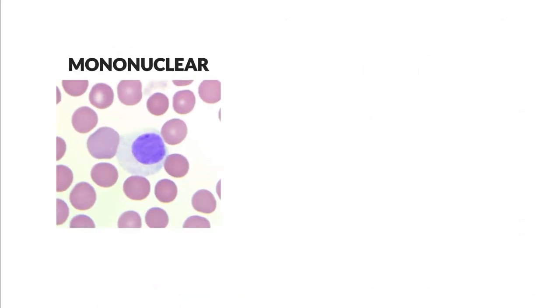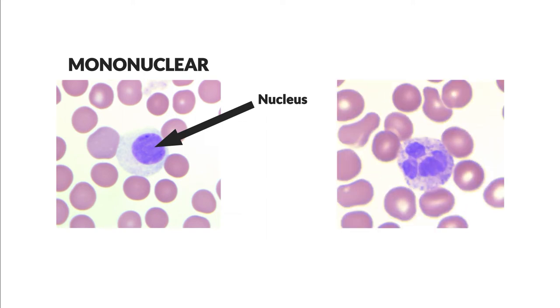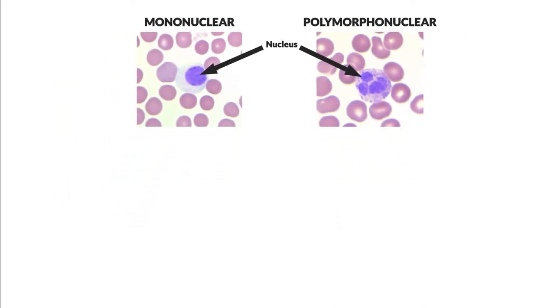Mononuclear, with a single large rounded nucleus which occupies practically the entire cytoplasmic volume, and polymorphonuclear, whose nucleus is lobulated and has multiple appearance. Depending on whether or not leukocytes have granules in the cytoplasm, they are classified as agranulocytes without granules in the cytoplasm and granulocytes with granules in the cytoplasm.